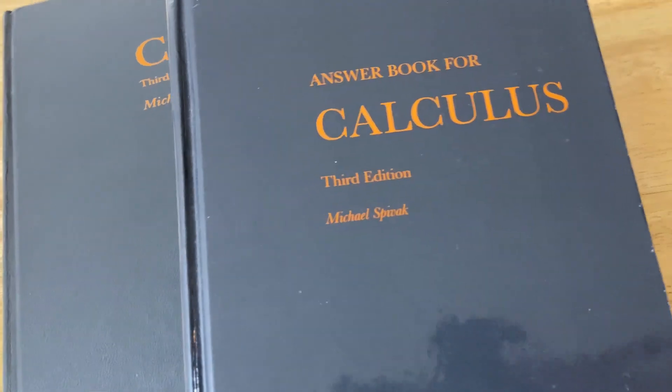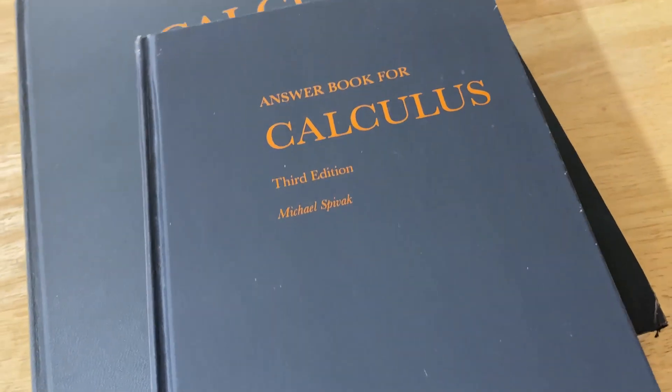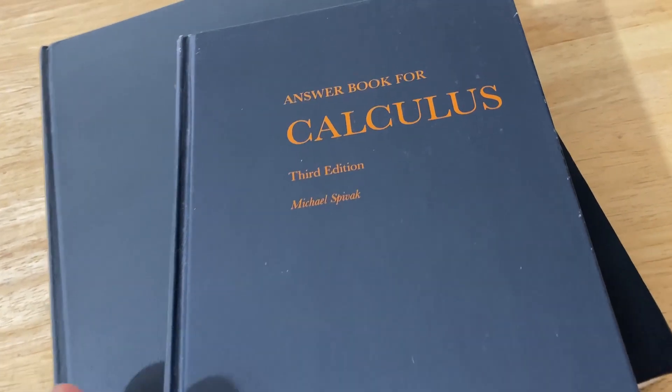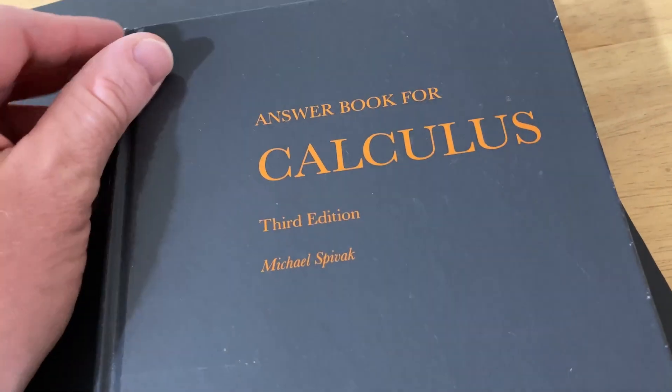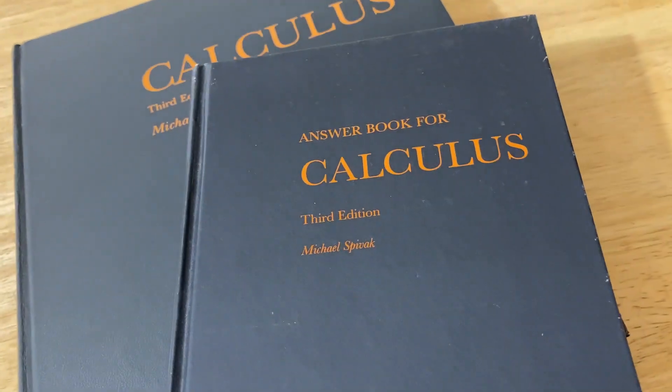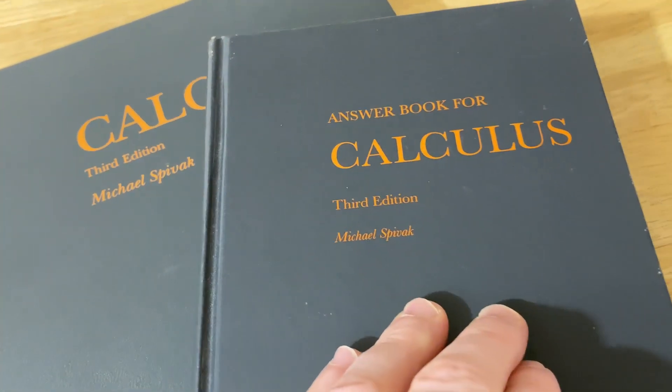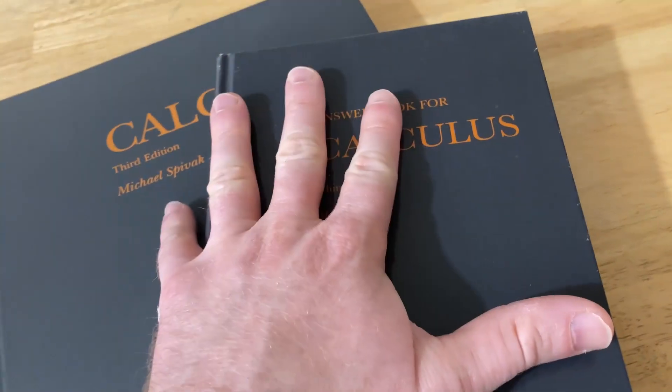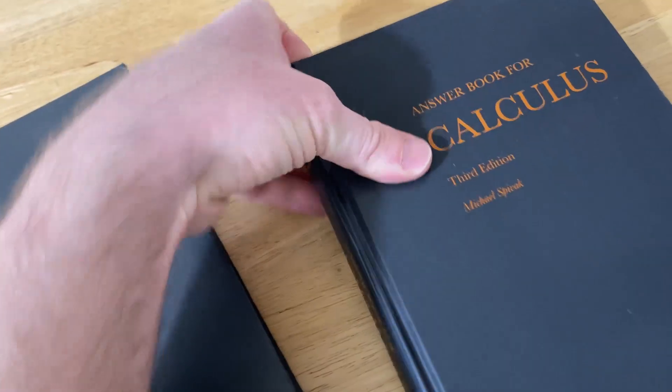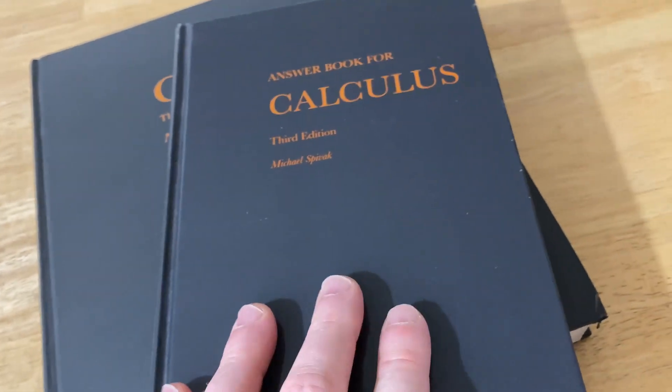So this is the answer book for Michael Spivak's calculus third edition. I just thought I would make a really quick video to talk about this answer book because it's a little bit different from other answer books. Also there is some really good news. There is a newer answer book available. I saw it and I will put a link in the description and basically it gives you the answers to the third and the fourth edition. So like let's say that I didn't have this book, I could buy that one and it would give me the answers to this book. Or if I had the fourth edition, I can buy the same book and I have the answers. So it's kind of cool that they did that.